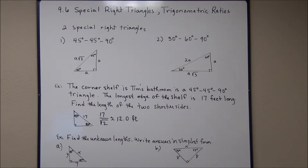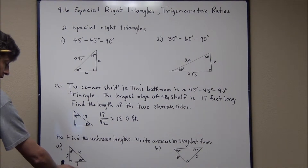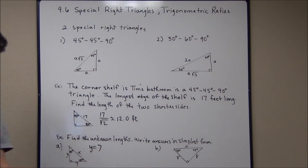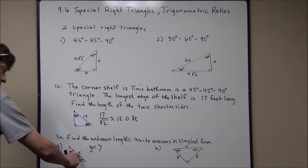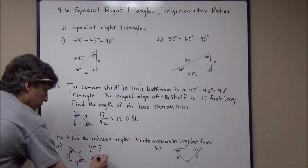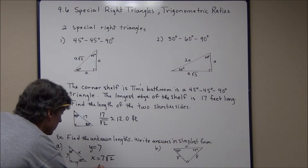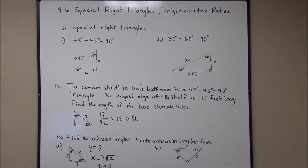Sometimes problems come out more evenly. In this 45-45-90 triangle, if one leg is 7 then y is also 7 because the legs are equal. The hypotenuse x equals the leg times √2, so x = 7√2, which is approximately 9.9.